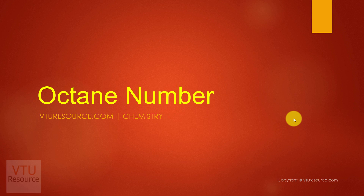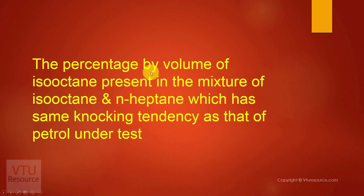We have discussed cracking, and we obtain petrol using cracking and also using other processes. So how to decide or measure the quality of petrol — that is a major question. We can measure the quality of petrol or gasoline by octane number. Octane number is defined as the percentage by volume of isooctane present in a mixture of isooctane and n-heptane which has the same knocking tendency as that of the petrol under test.